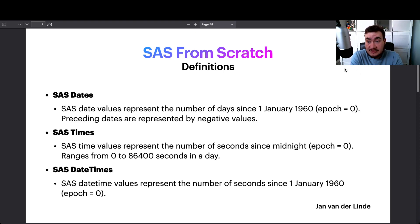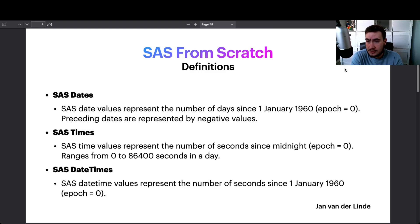So that covers the definitions we need when talking about dates, times, and datetimes in SAS. The way SAS processes this is very similar to how Unix time works, with the exception that Unix time starts from 1st January 1970, not 1960.